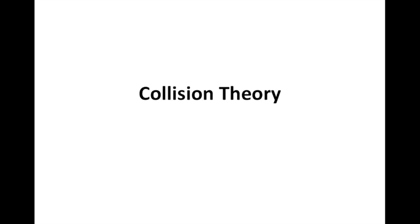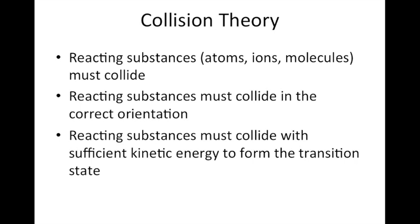In this video we are going to discuss collision theory — what it is and why it's important in chemistry. Collision theory describes how reactions take place. The main point is that the substances that are reacting must collide in order to react. They must physically come in contact with each other, collide in the proper orientation, and collide with a sufficient amount of kinetic energy in order to form the transition state and go on to form the product. If they collide with a very low amount of energy, they probably won't have enough energy to proceed in the reaction.